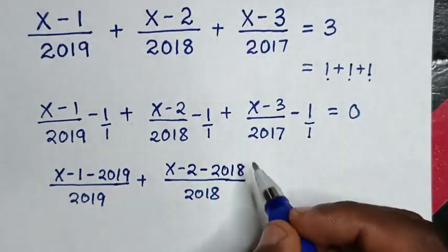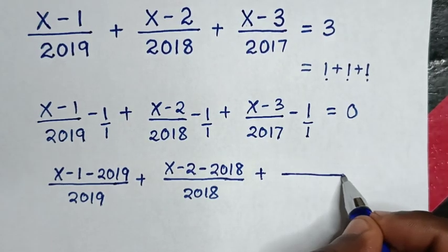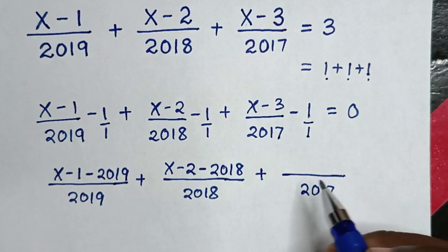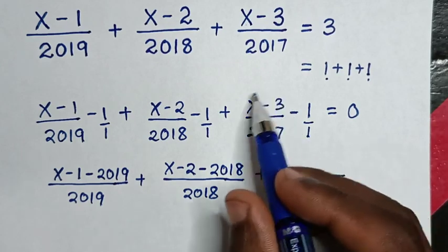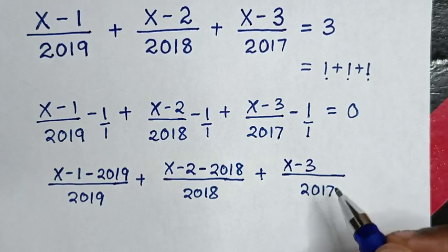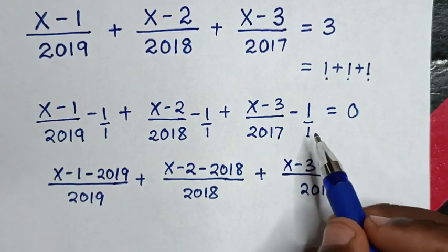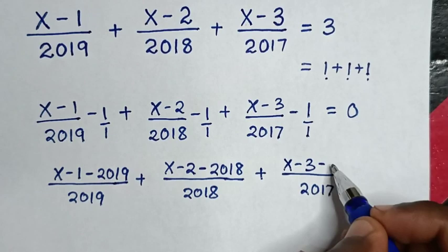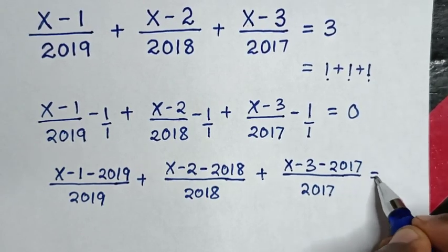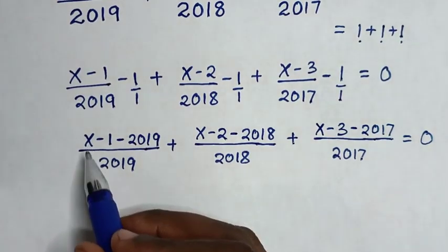Then the LCM of the third pair is 2017. 2017 divided by 2017 is 1, times (x minus 3) is (x minus 3); 2017 divided by 1 is 2017, times negative 1 is negative 2017. Is equal to 0.